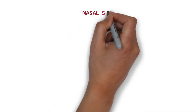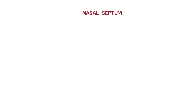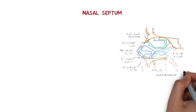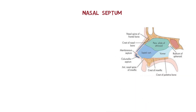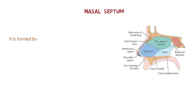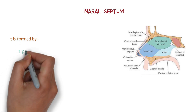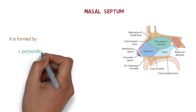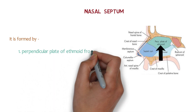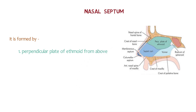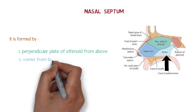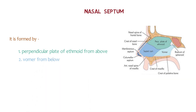Hey medicos, welcome back. Today we are going to talk on the topic of nasal septum, focusing on how the nasal septum is formed. Here we have the diagram of the nasal septum. It is mainly formed by the perpendicular plate of ethmoid from above, and below we have the vomer.